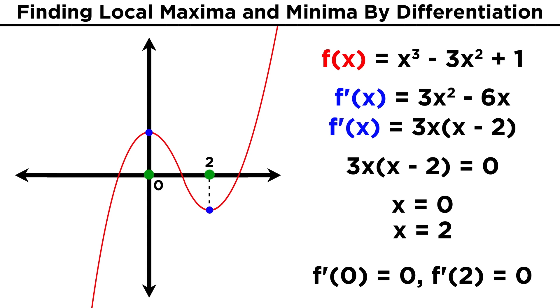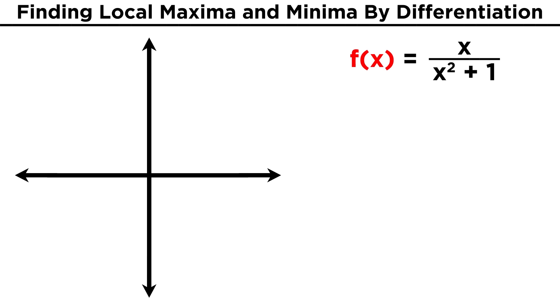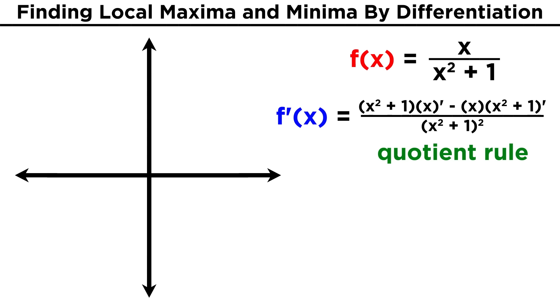Of course that one was pretty simple, so let's try one more for practice. What about x over the quantity x squared plus one? Again, we must take the derivative, and for that we need the quotient rule.